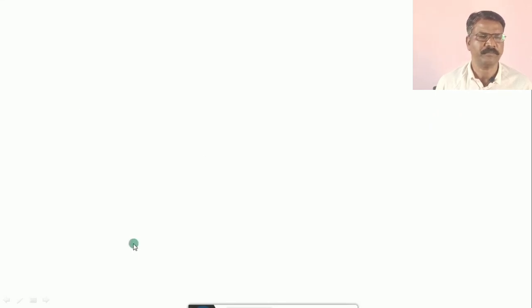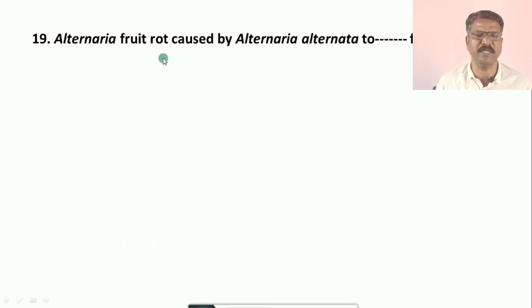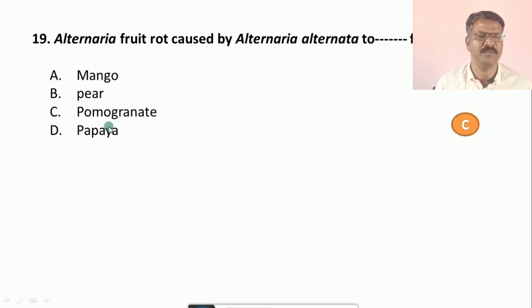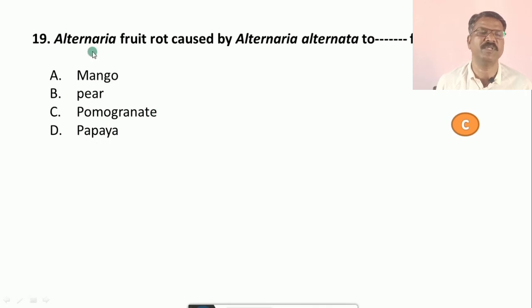Question number nineteen: Alternaria fruit rot caused by Alternaria alternata affects which fruits? Options are: a) mango fruit, b) pear fruit, c) pomegranate fruit, d) papaya fruit. The correct option is c, that is pomegranate fruit. Pomegranate fruit is also infected by Alternaria alternata and therefore it is called the Alternaria fruit rot of pomegranate.